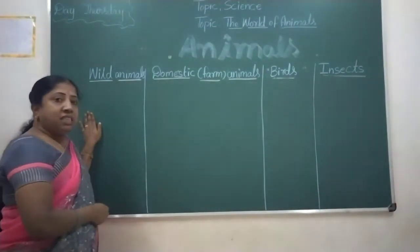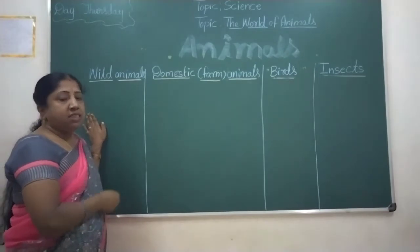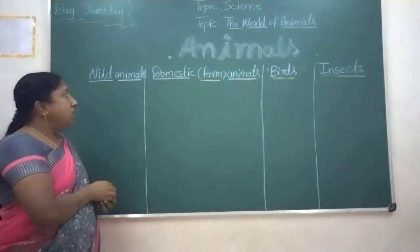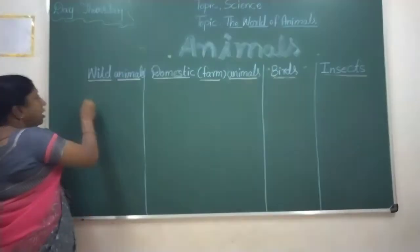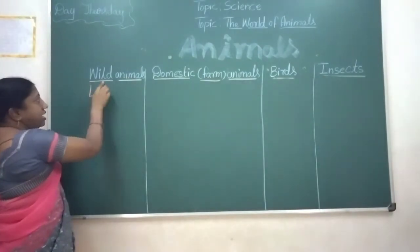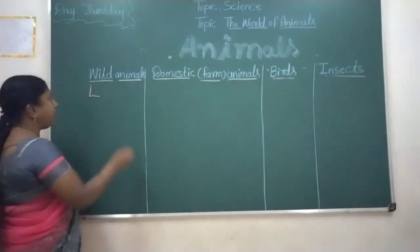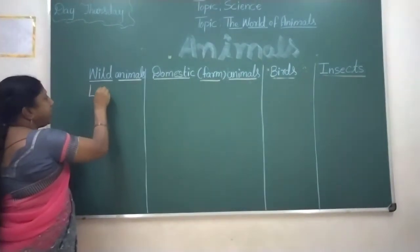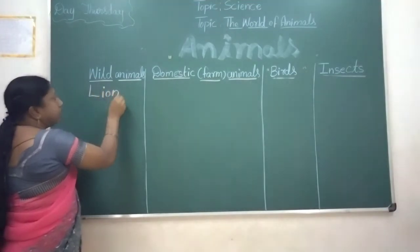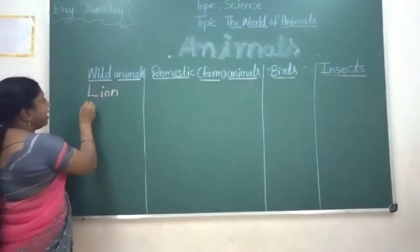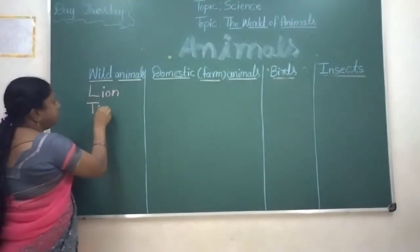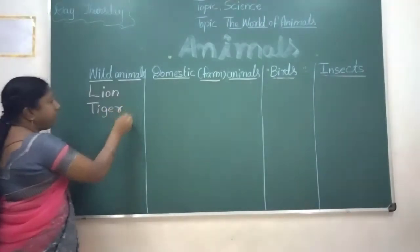Wild animals live in the forest. Examples of wild animals include lion and tiger.